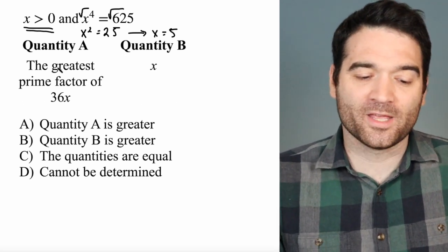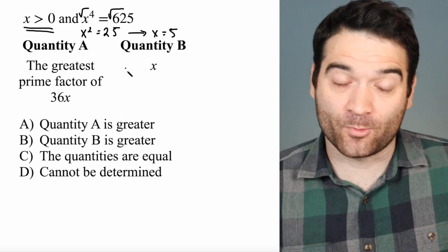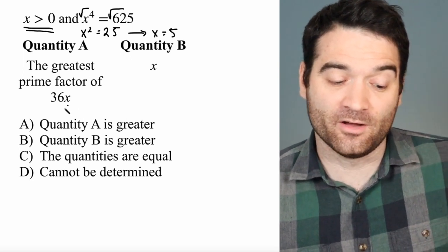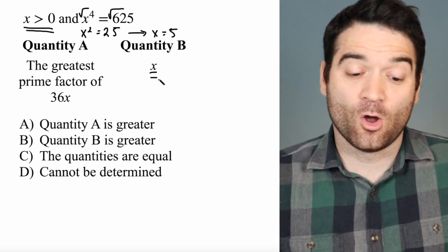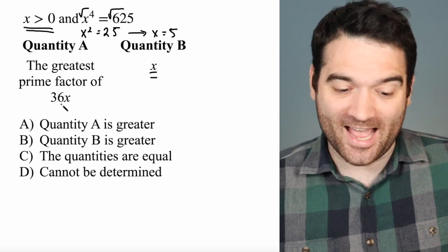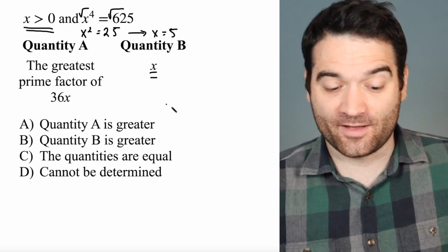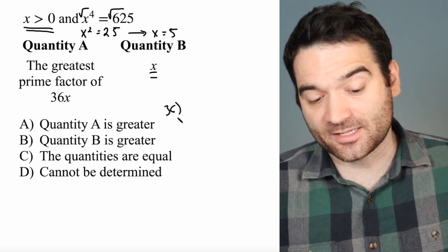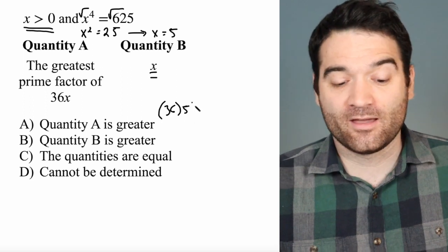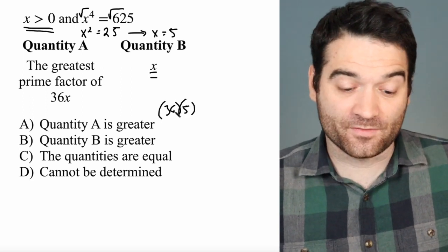Okay, so we're told that the, or rather, we want to compare. What's the greatest prime factor of 36x to x? Well, 36x is going to be 36 times 5. I'll just write that here. 36 times 5. What are the prime factors of this number?